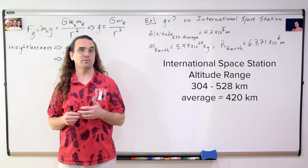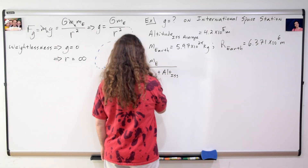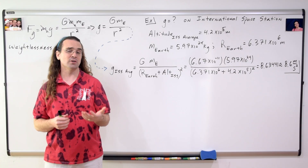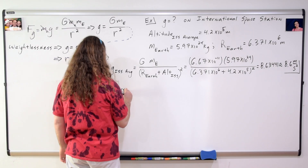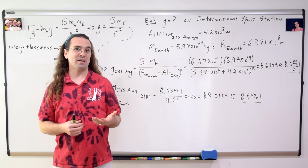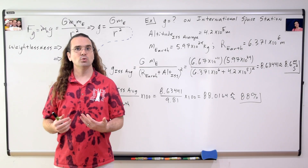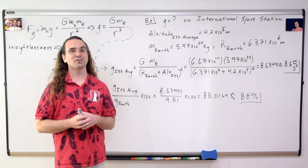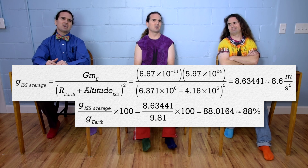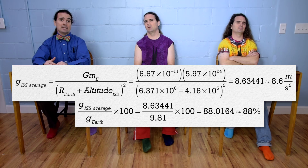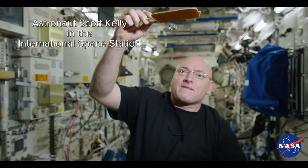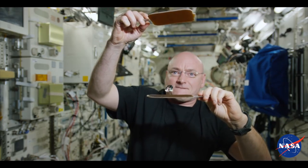Substituting all those into our equation for the acceleration due to gravity gives us an average acceleration due to gravity on the International Space Station of roughly 8.6 meters per second squared. If you divide that by the acceleration due to gravity here on Earth and multiply by 100, you will see that astronauts in the International Space Station experience an acceleration due to gravity which is roughly 88% of what we experience here on Earth. How can the acceleration due to gravity acting on him be 88% of what we are experiencing right now?